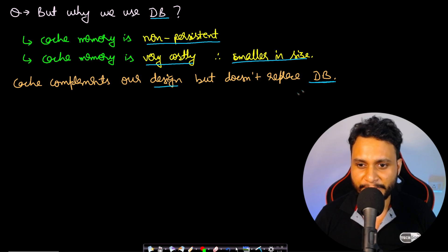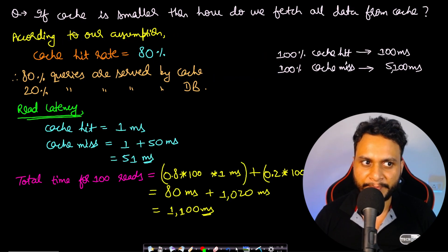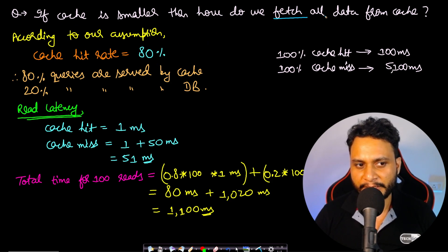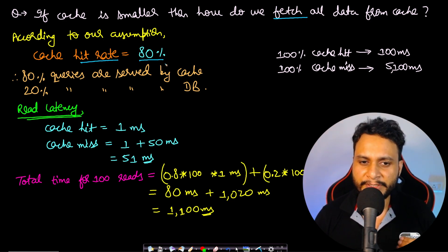Now the question is, if cache is smaller, then how do we fetch all the data from the cache? According to our assumption, the cache hit rate is let's say 80%, that is, 80% of the time the user gets all the reads from the cache. So 80% queries are served by the cache and 20% are served by the DB.